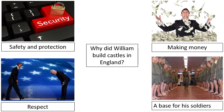What I want you to do is copy these four reasons out. Give it a mini title: 'Why did William build castles in England?' Then list those four things. If you want to draw a little picture to go with them, that's absolutely fine - totally up to you. Pause the video now, get that drawn, and I'll see you on the next slide.